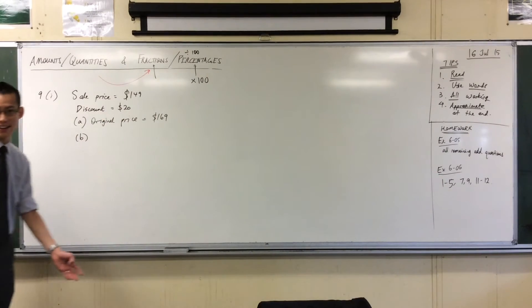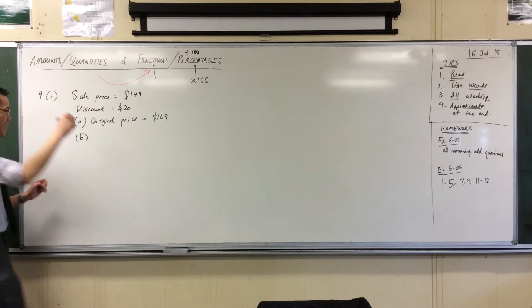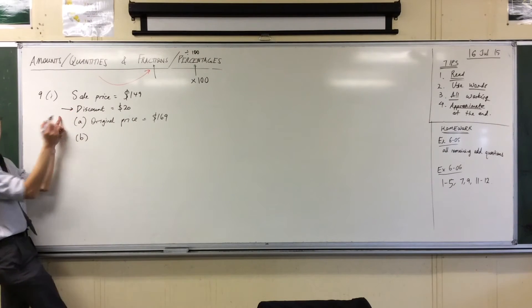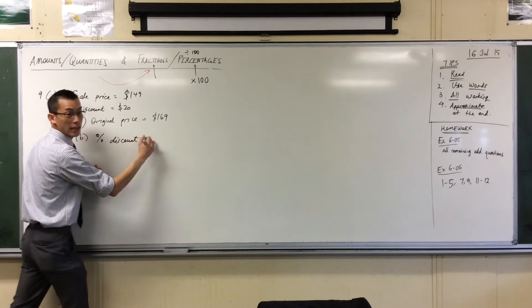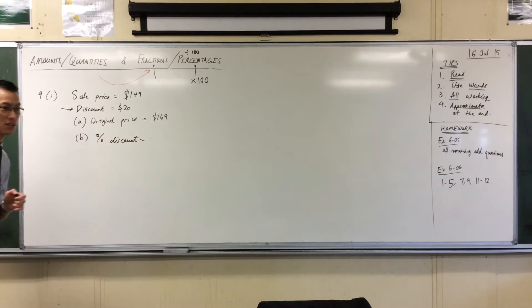I'm going to write 'percentage discount' because that's actually what I want to calculate. Give me a suggestion, what should I do?